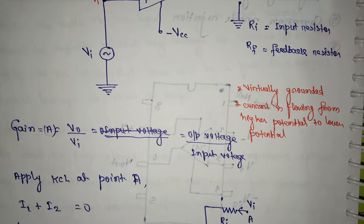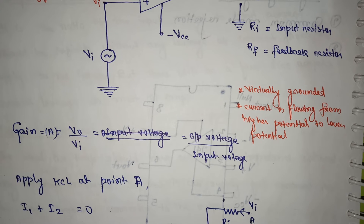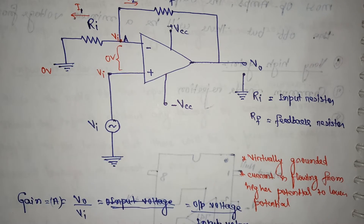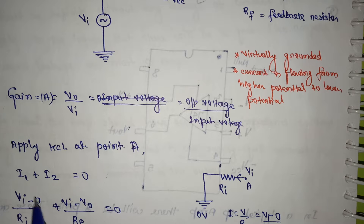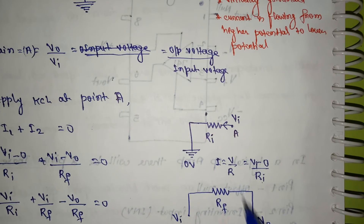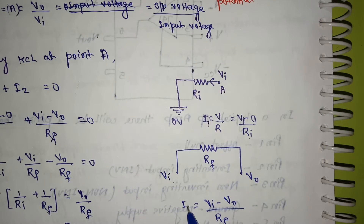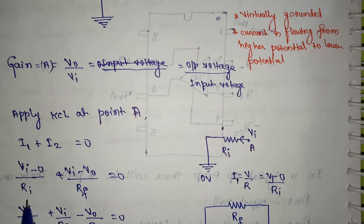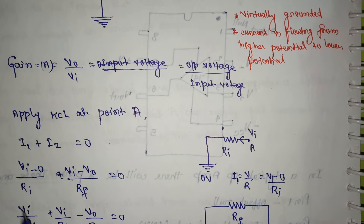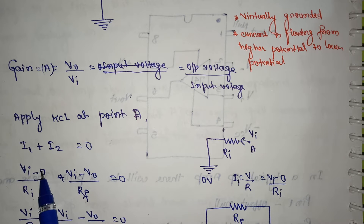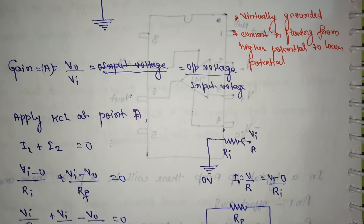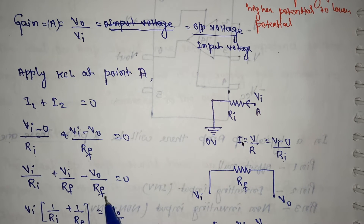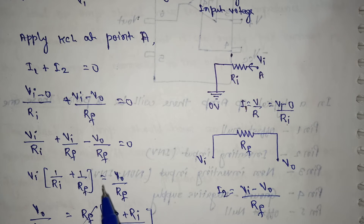Applying KCL at point A: I1 plus I2 equals zero. Substituting: (VI minus 0) divided by RI, plus (VI minus V-naught) divided by RF equals zero. Separating terms: VI over RI plus VI over RF minus V-naught over RF equals zero. Taking VI as common gives VI times (1/RI plus 1/RF) equals V-naught over RF.